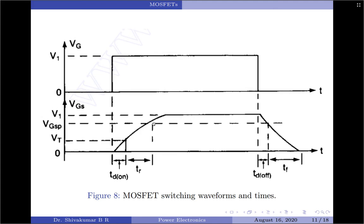Once VGS equals VGSP, the device is said to be in the on state and the voltage across VGS becomes approximately constant. During turn-off, one simply makes the gate voltage zero — there is no need to make the gate voltage negative as with a BJT, because there is no storage time concept in a MOSFET. In the turn-off duration there are two time parameters: turn-off delay and fall time. The turn-off delay TD(off) is the time required for the input capacitance to discharge from the overdrive gate value V1 to the pinch-off region.